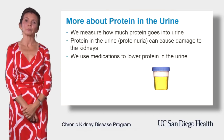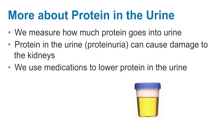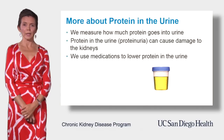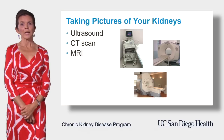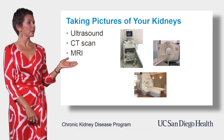If your kidneys are spilling protein in the urine, we'll run an extra test to quantify how much protein is being wasted. Protein in the urine, also known as proteinuria, can over time cause damage to your kidneys. Whenever possible, we use medications to decrease the amount of protein in the urine and to protect your kidneys.